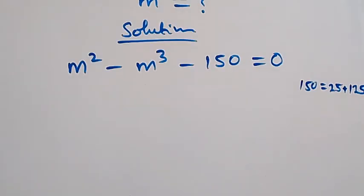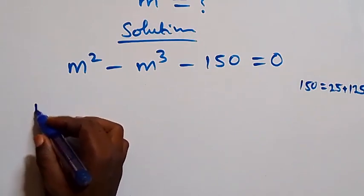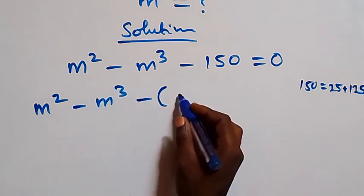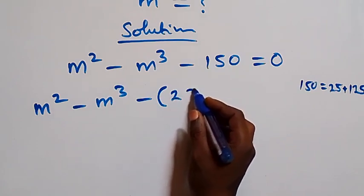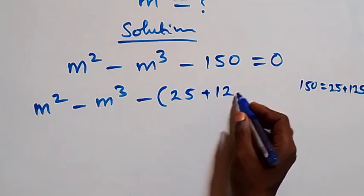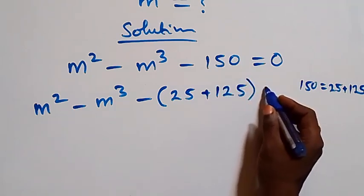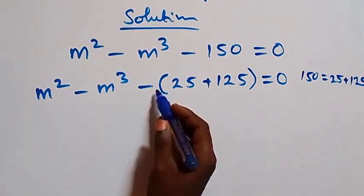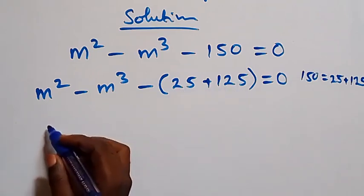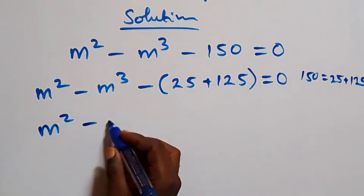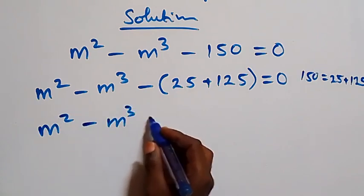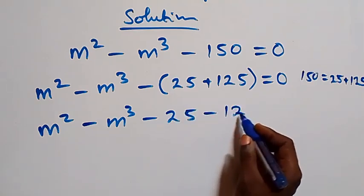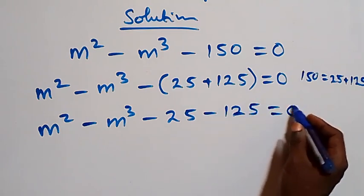So what we have becomes m squared minus m cubed, then minus in bracket 25 plus 125, equals zero. This minus affects both 25 and 125, and we have m squared minus m cubed minus 25 minus 125, which equals zero.